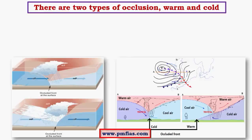There are two kinds of occlusion: warm and cold. We can see which kind of fronts are created during the occlusion process. In one case we see the occlusion of cold and warm fronts where the cold front pushes against the warm front — this is called cold front occlusion. In the other case, the warm front dominates, pushing against the cold front — this is called warm front occlusion.